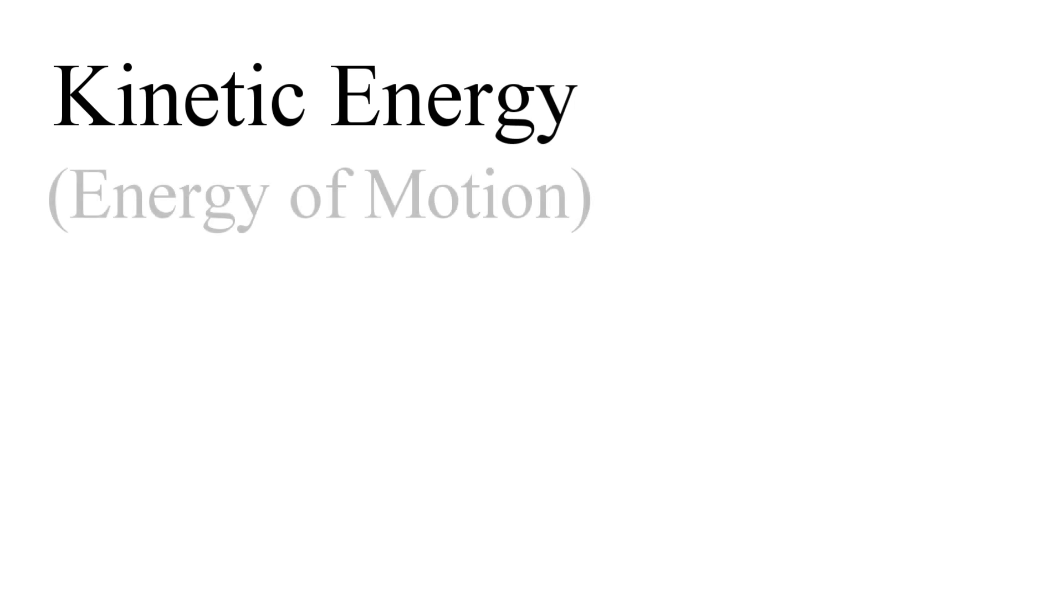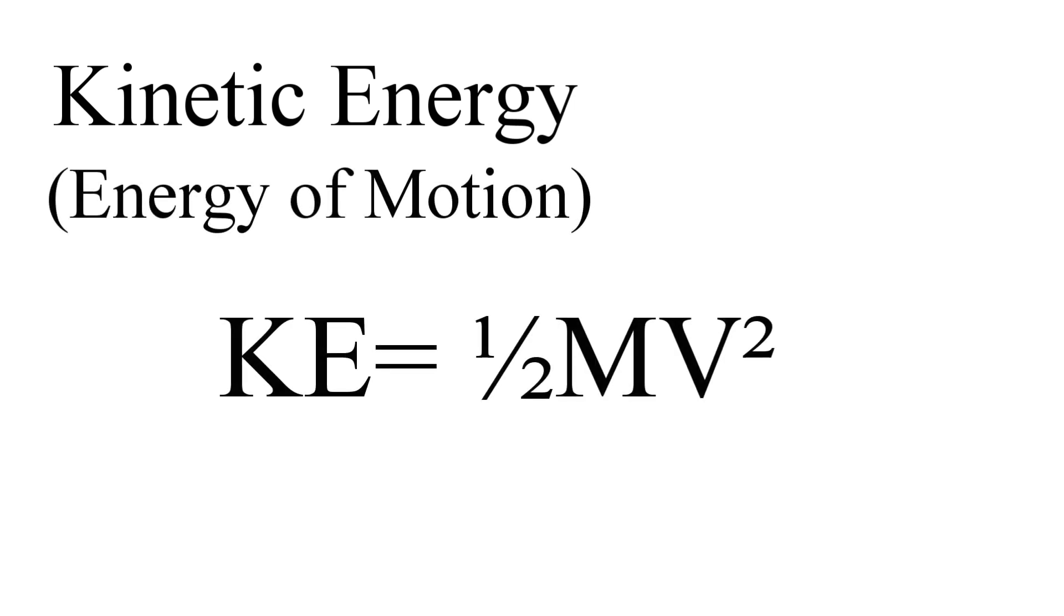The next bit of magic concerns our kinetic energy. This is simply the energy of motion. The formula looks like this. Kinetic energy is equal to one-half m v squared. Again, we have a direct relationship with one parameter, m, the mass, and then there's v squared again.